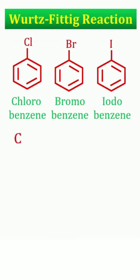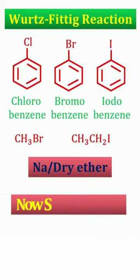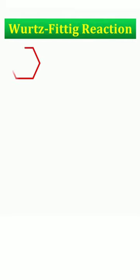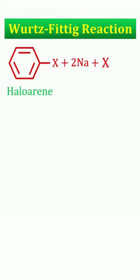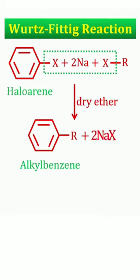Wurtz-Fittig reaction: when an aryl halide is treated with an ethereal solution of an alkyl halide in the presence of sodium, an alkylbenzene is obtained. The reaction is known as the Wurtz-Fittig reaction. This haloarene and this haloalkane react with sodium in the presence of dry ether; sodium halide is removed and alkylbenzene is formed.